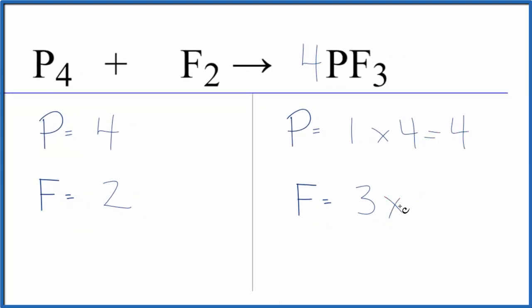But three times four, that'll give me 12. So now I have an even number of fluorines, and that's really easy to fix.